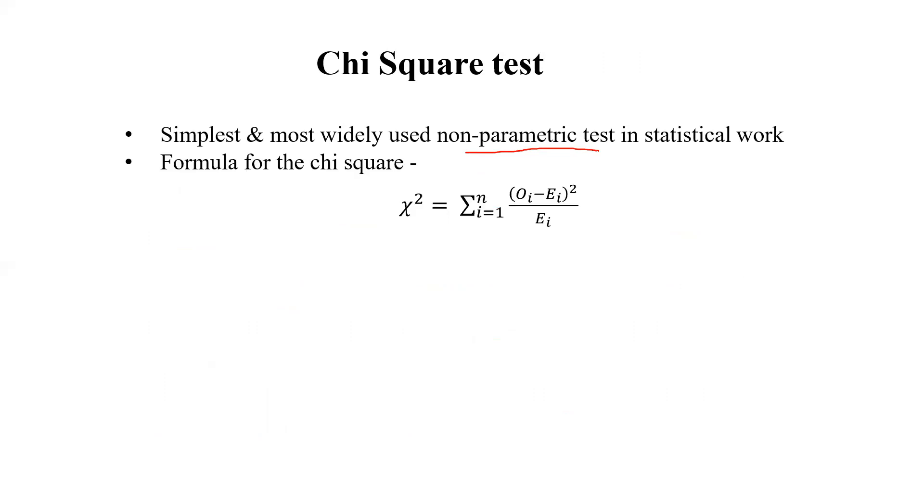So here we are talking about chi-square test. The chi-square test formula, this is the notation of the chi-square. Chi-square equals summation i equals 1 to n, (Oi minus Ei) whole square divided by Ei.